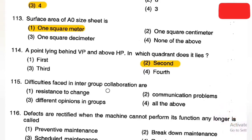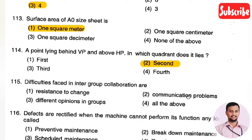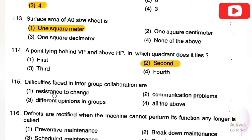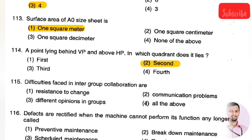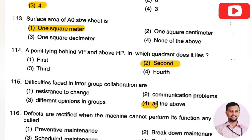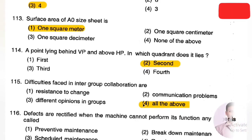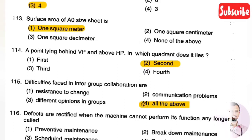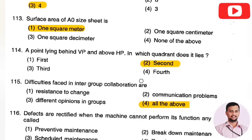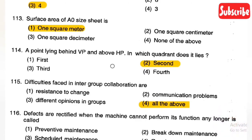The next question: the difficulties faced in intergroup collaboration are — Option 1: resistance to change, Option 2: communication problems, Option 3: different opinions in groups, Option 4: all of the above. The right answer is Option 4, all of the above. In any group formation, we generally find all three difficulties in collaboration.